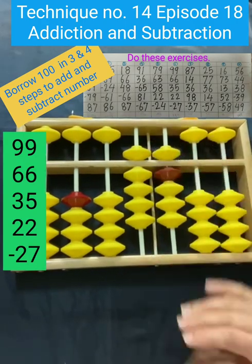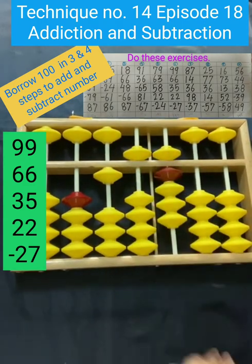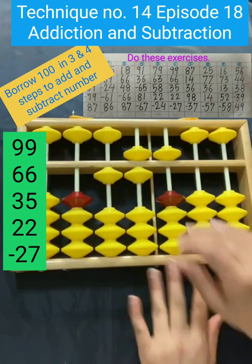Add 99, next is 66. To add 60, reduce 40, borrow 100, and for 6, reduce 4, borrow this 10.